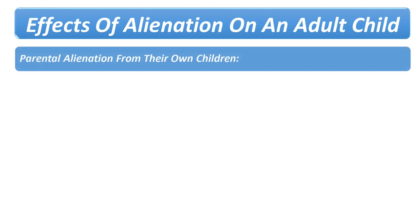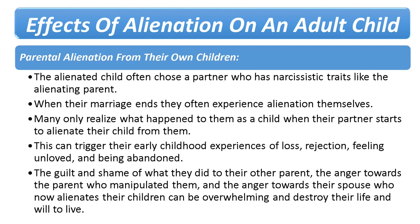Parental alienation from their own children. Unless we are mindful, we often take on many traits of our parents and unconsciously seek qualities in a partner that resemble a parent, as it feels familiar and safe. As the child grew up with an alienating parent, they often choose a partner with narcissistic traits like that parent. The adult alienated child may only realize what happened to them as a child when their partner starts to alienate their children from them — triggering early childhood experiences of loss, rejection, feeling unloved, and abandonment. This double whammy can devastate them, especially if they realize at that moment what they did to their own parent.